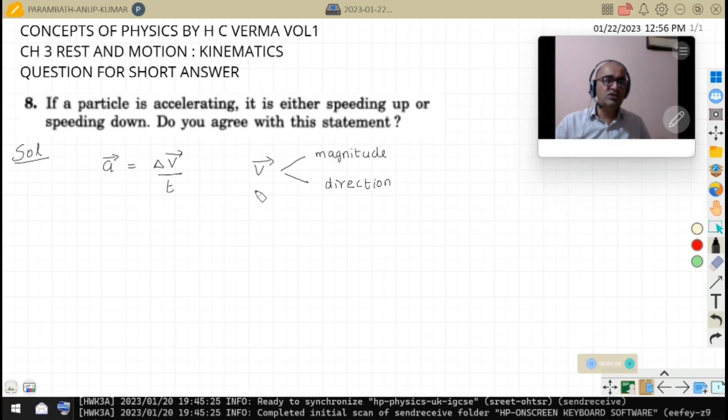If either magnitude changes, the change can happen in three ways: magnitude increases, magnitude decreases, or direction changes.